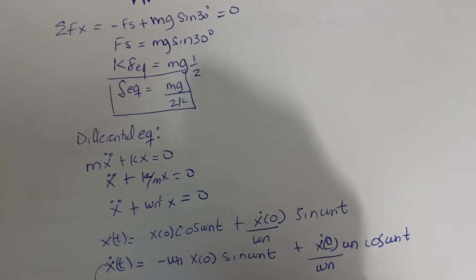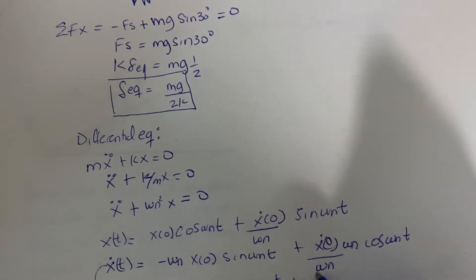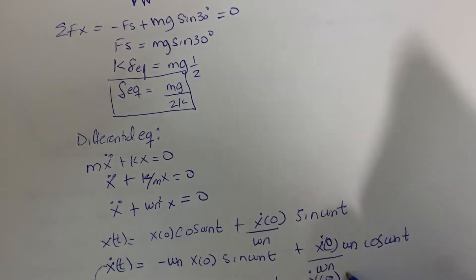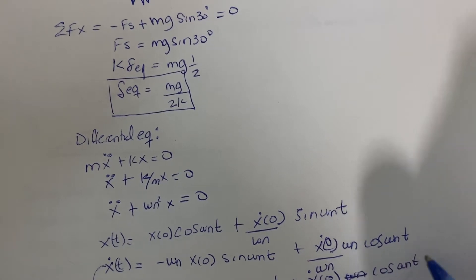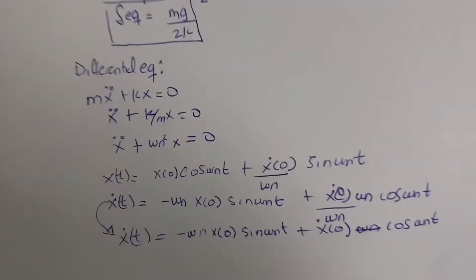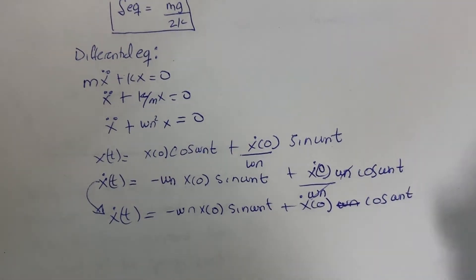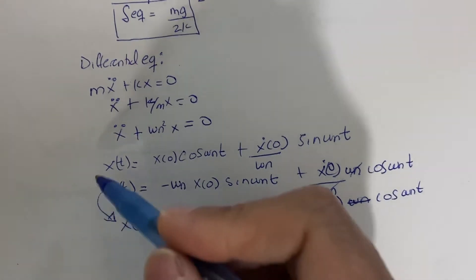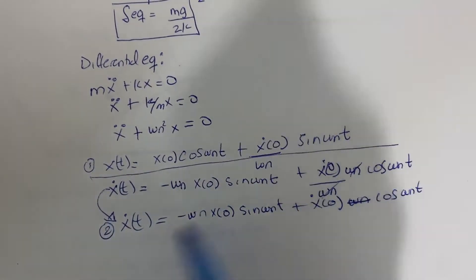The simplified velocity equation is: ẋ(t) = −ωₙ x₀ sin(ωₙt) + ẋ₀ cos(ωₙt), since certain terms cancel out. We now have these two solutions — equation one for displacement and equation two for velocity — and we will work with both to solve the problem.